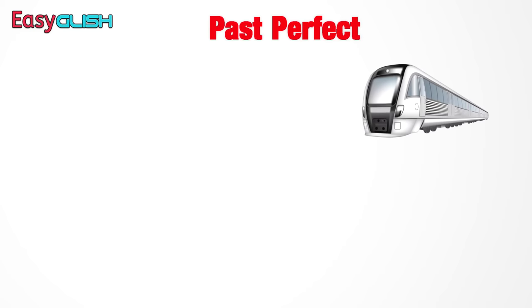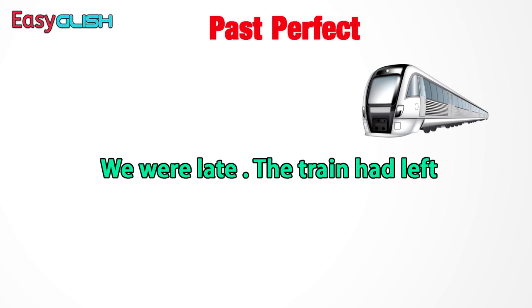نشوفوا example ما فيهش before و after. كتعود لصاحبك على شنوقع لك مع الترين — غتقولو: 'We were late. The train had left.' صافي — واضح راه هاد past perfect وما خصوش يكون في after أو before.